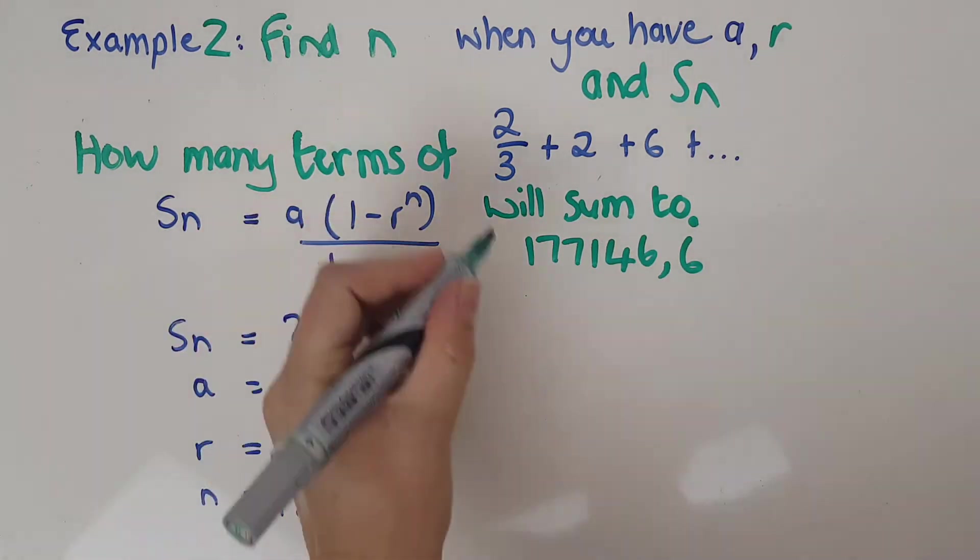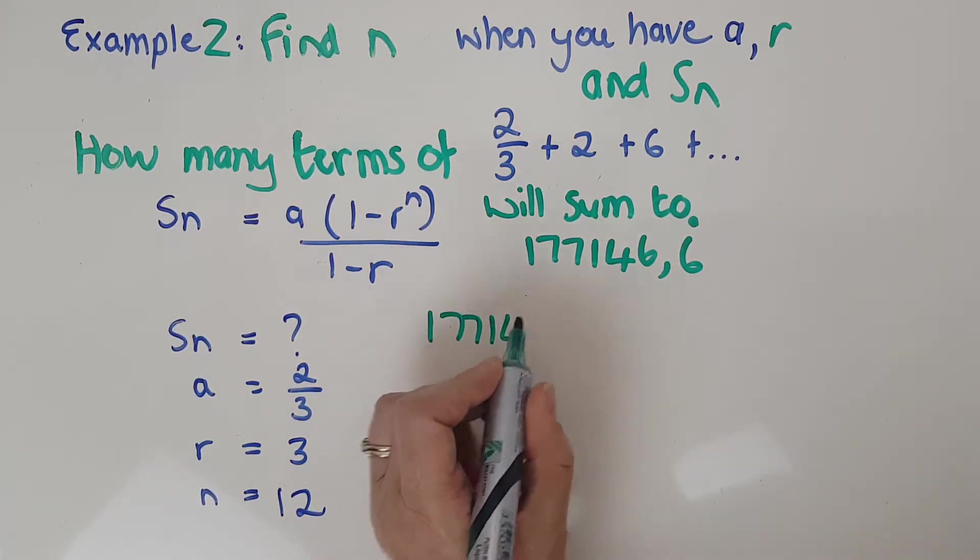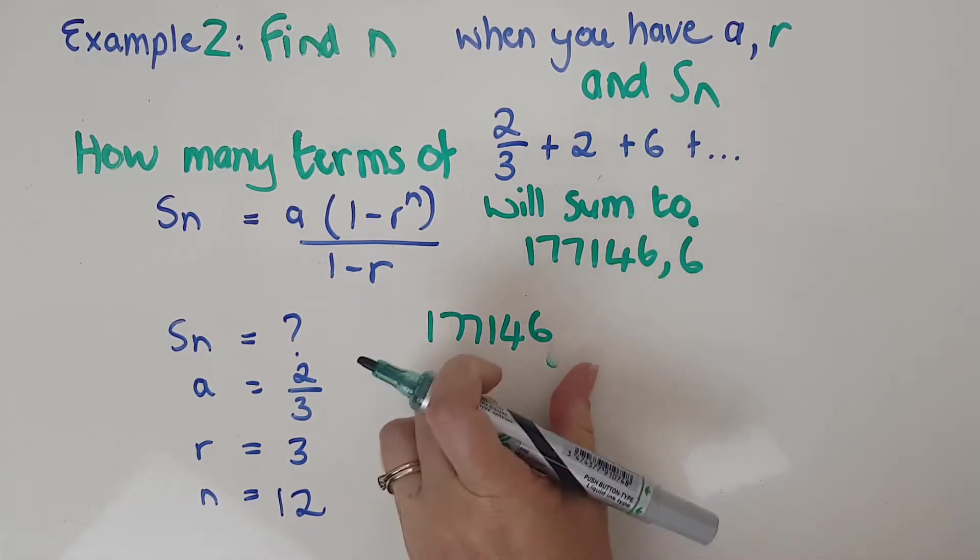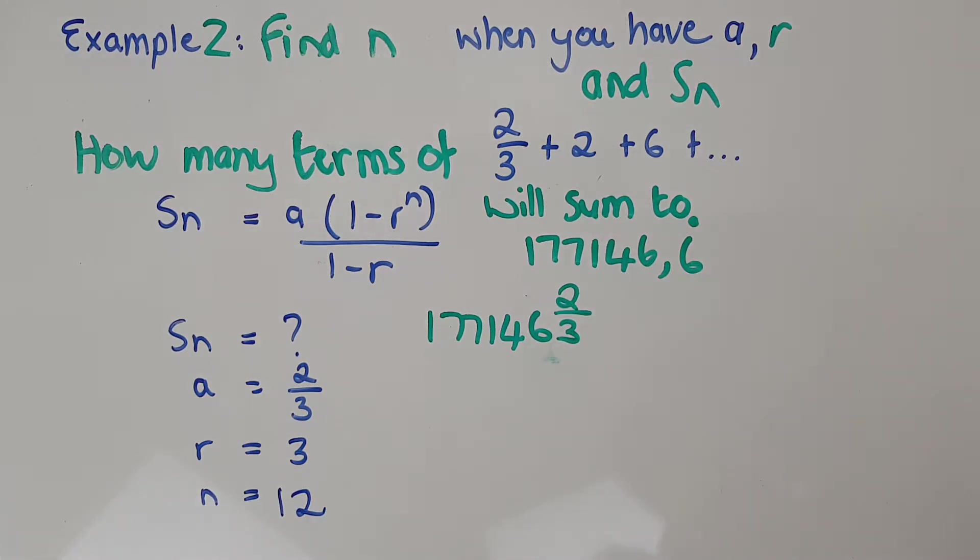And I'm going to say, here's my formula. I'm going to take this 177146, I think I'm actually going to write it as 177146 and 2 thirds because that'll help my calculator to do exactly the right thing.